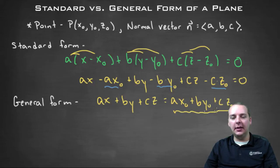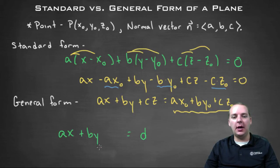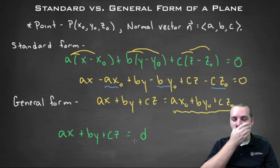But check it out, everything here on the right hand side, that's just a constant. Everything there is just a constant. So if you just absorb all those constants together, just to be a one single giant constant, we'll just call it d, and we'll leave the left hand side as is, we'll have a x plus b y plus c z equals whatever this random constant is.